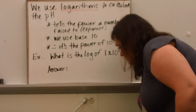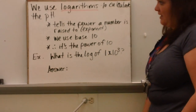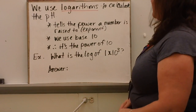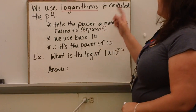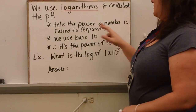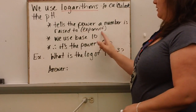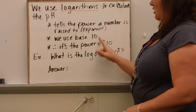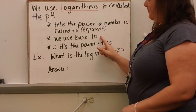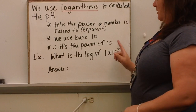We use logarithms, which you've already learned about in math class, to calculate the pH. A logarithm tells us the power that a number is raised to, or its exponent. We will only be using base 10, so it's the power of 10.